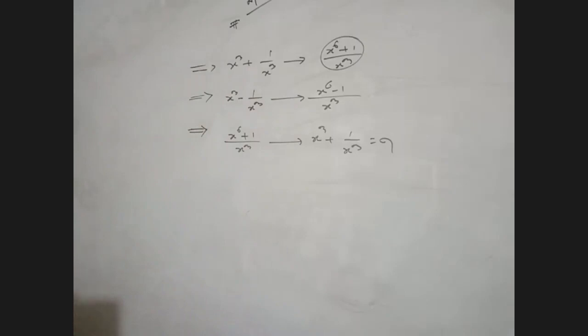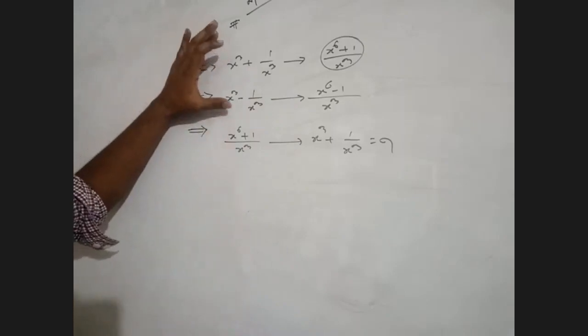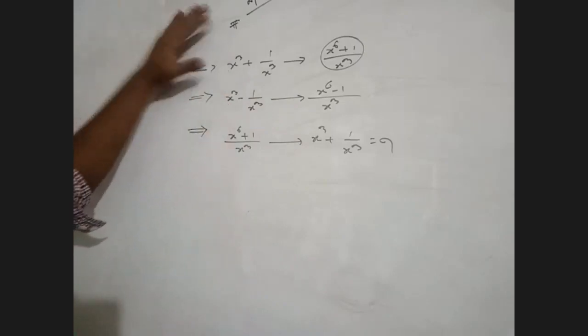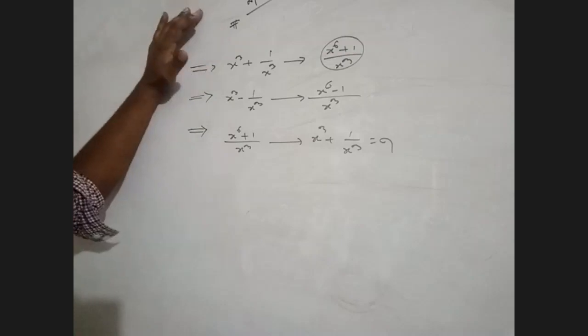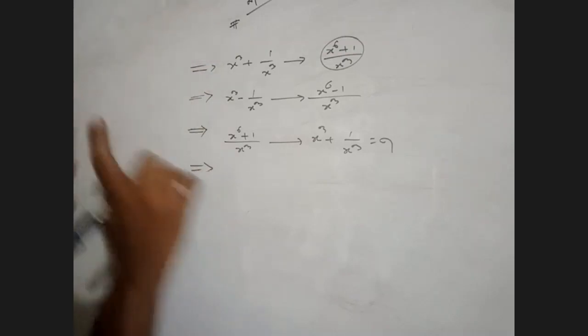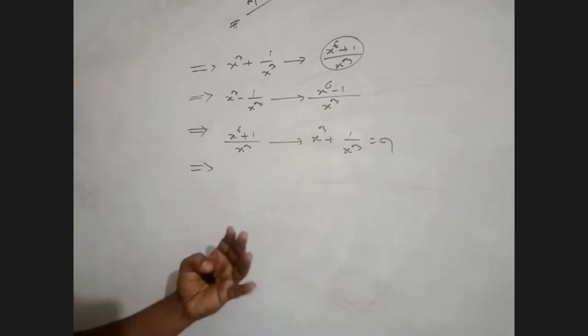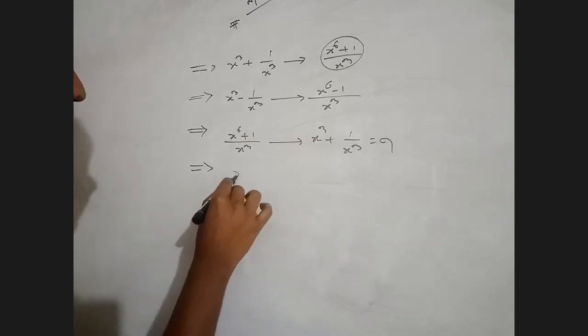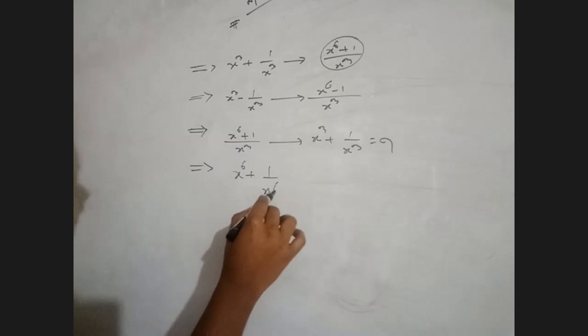So, we have two formulas. We have two formulas. This one is x to the power 6 plus 1 divided by x to the power 6.